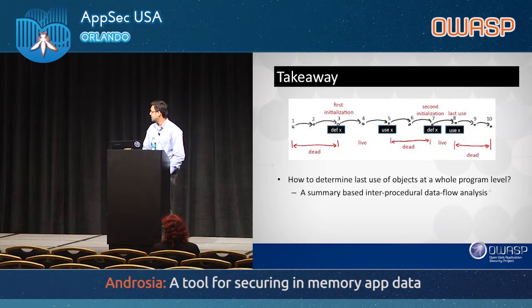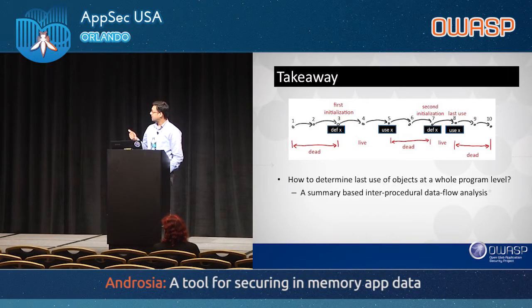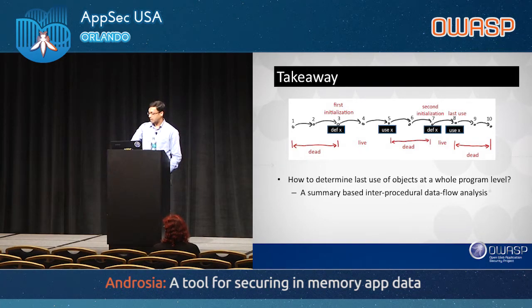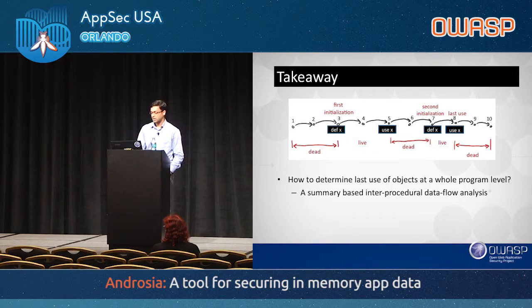The main takeaway can be explained with a diagram. Assume statements 1 to 10 exist in your code. At statement 3, variable X is defined and initialized with an object. At statement 5, it is used. So X is dead between statements 1 and 3, and live from statement 3 until 5.